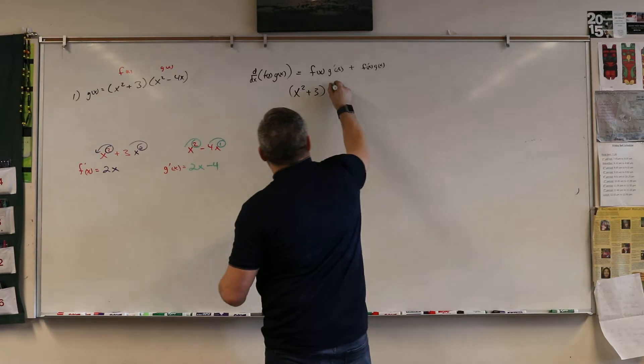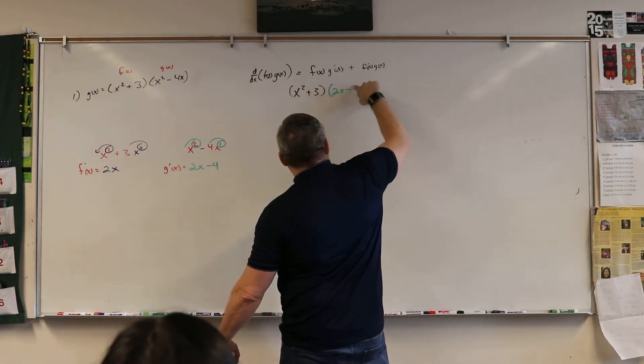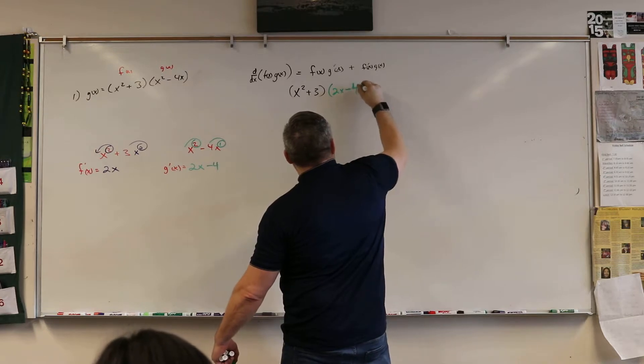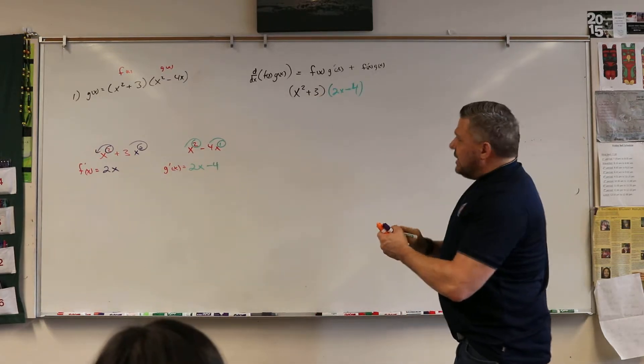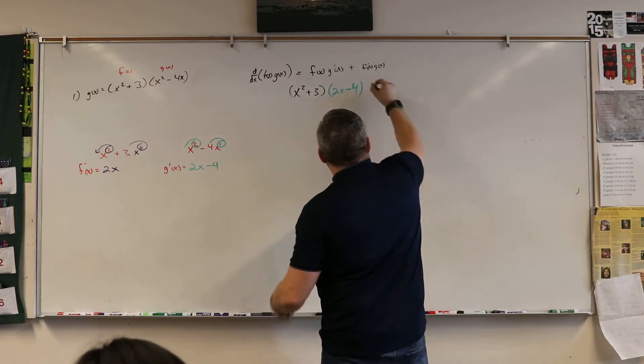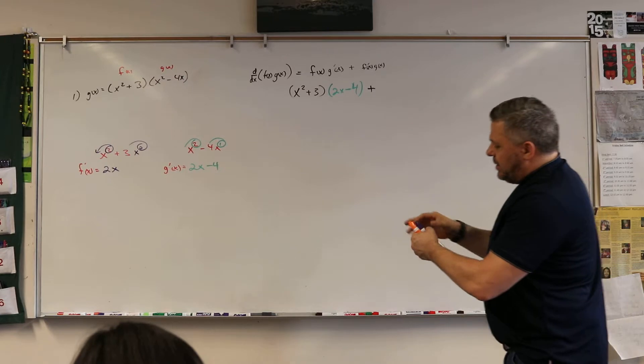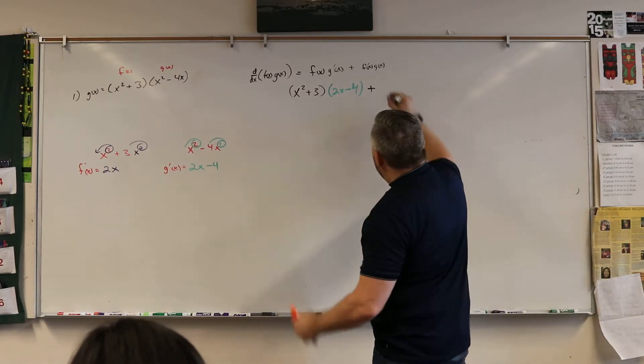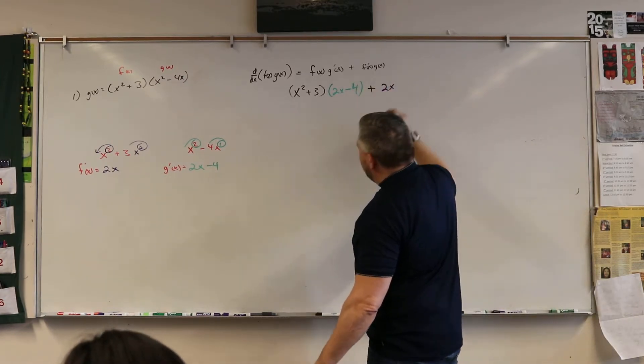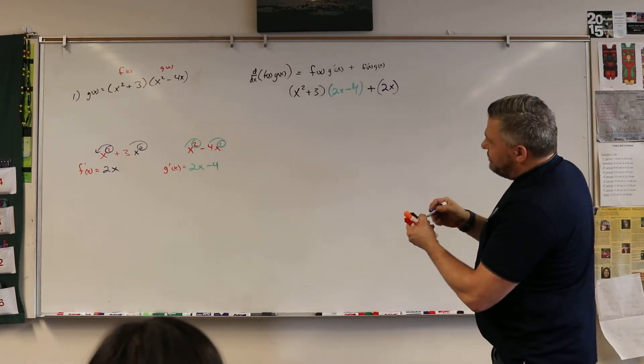Which would be the green one, right? So 2x minus 4. And then we're going to add f prime of x, which is what? The 2x, right?